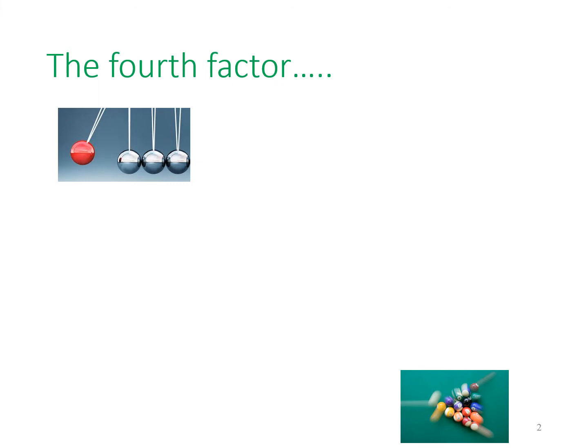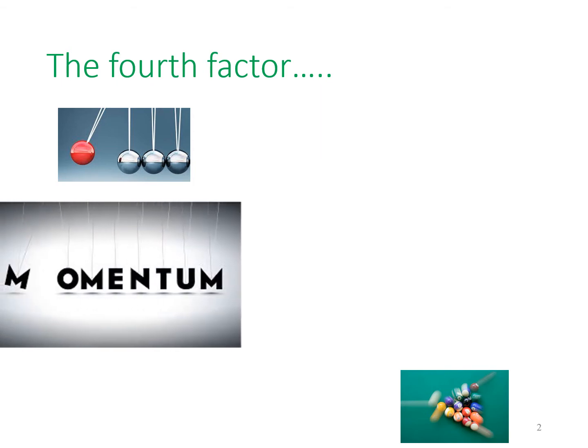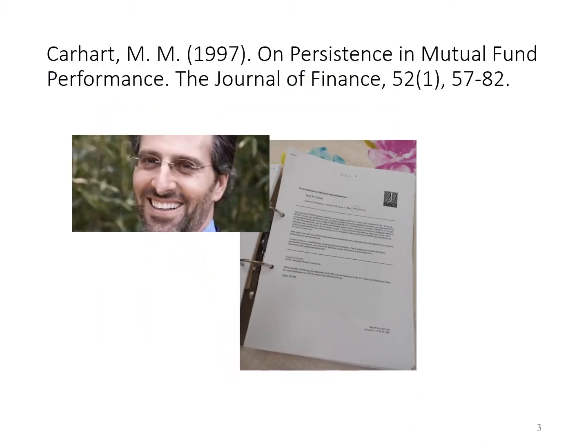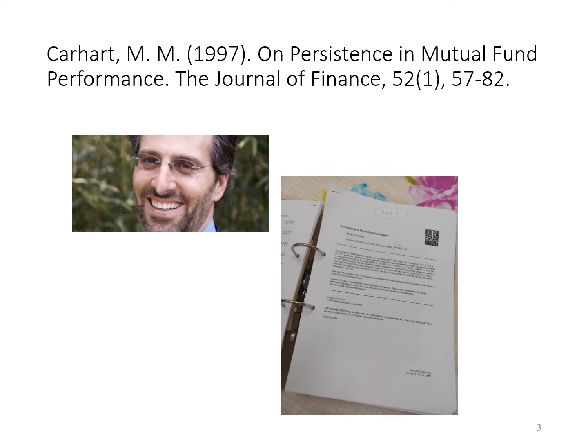What is the fourth factor? In 1997, Carhart added a momentum effect to the three-factor model as a tool to evaluate mutual fund performance. The title of Carhart's journal is 'On Persistence in Mutual Fund Performance,' published in the Journal of Finance in 1997. You are strongly encouraged to look for the original article and read.